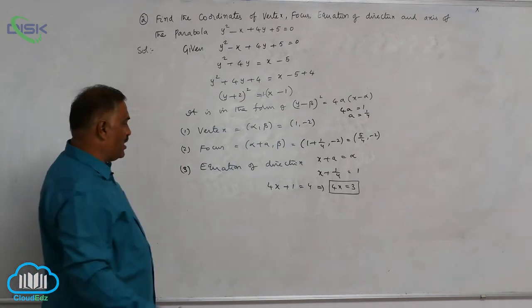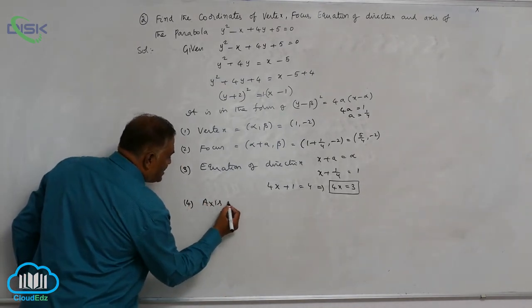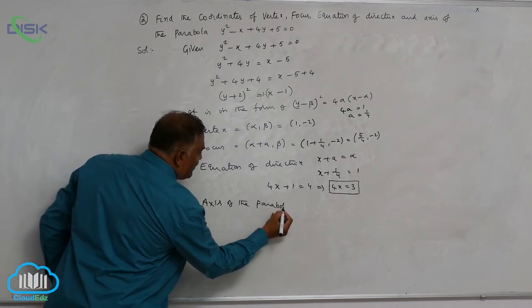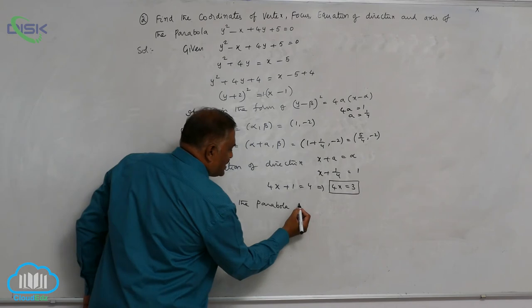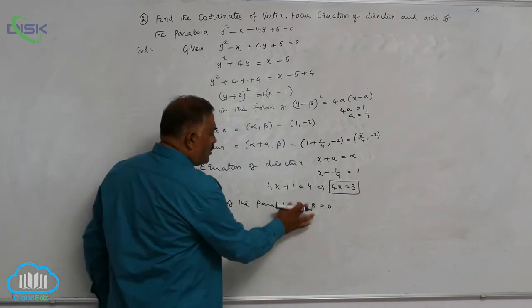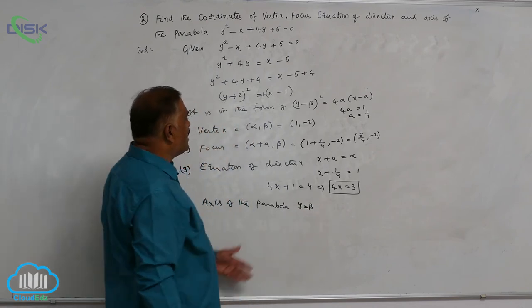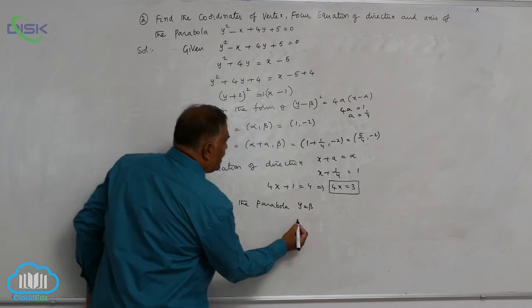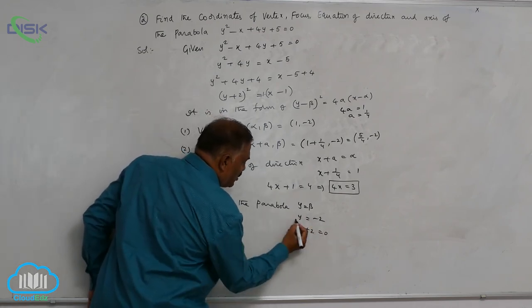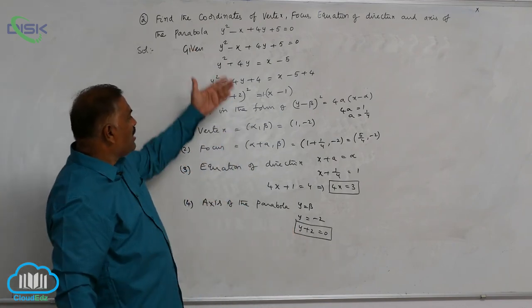Last but not least, axis of the parabola. Fourth one, axis of the parabola is given by y plus beta is equal to 0, or y equal to beta. What is y equal to beta value? y equal to minus 2, or y plus 2 is equal to 0. Now you can check very clearly, we found out all the points.